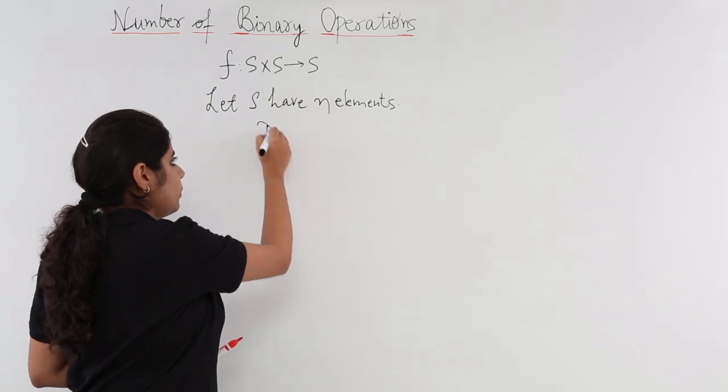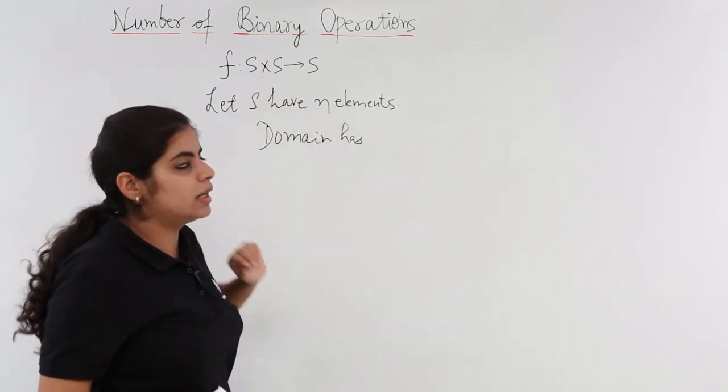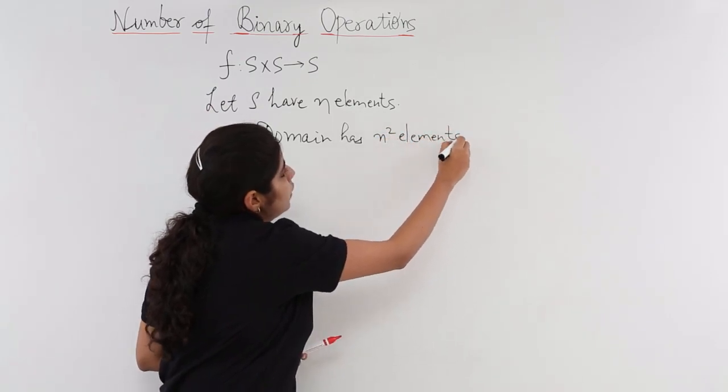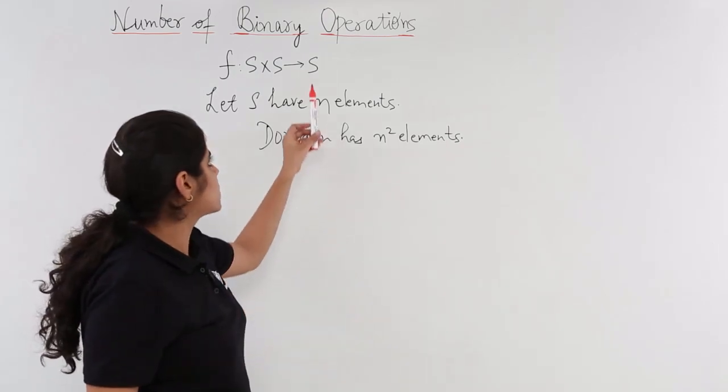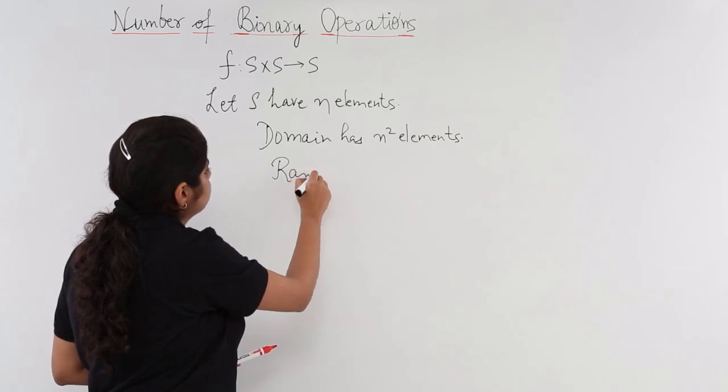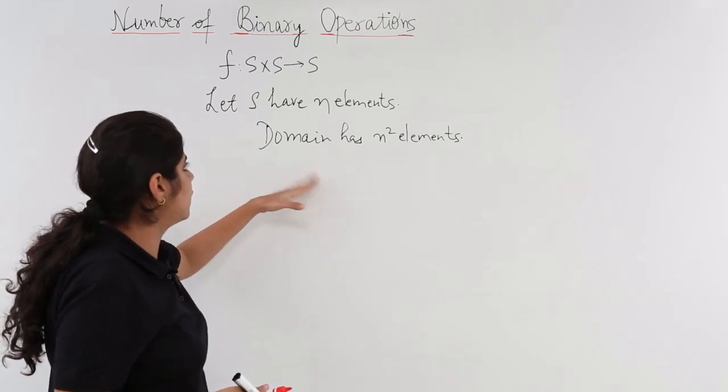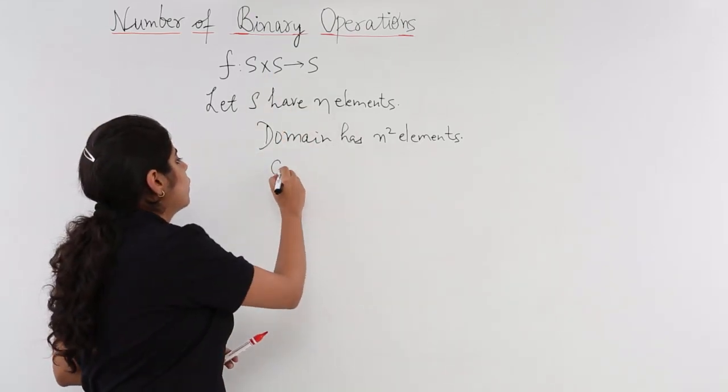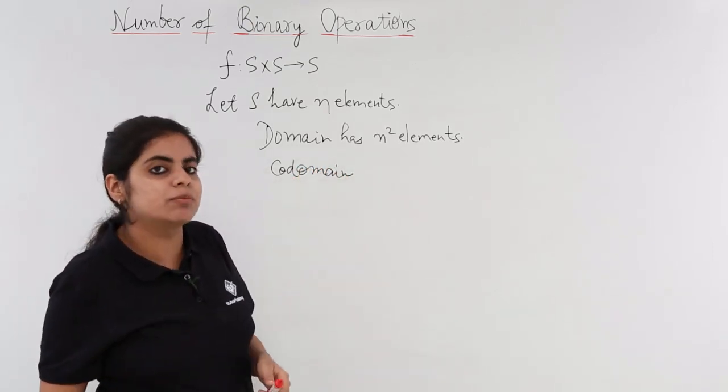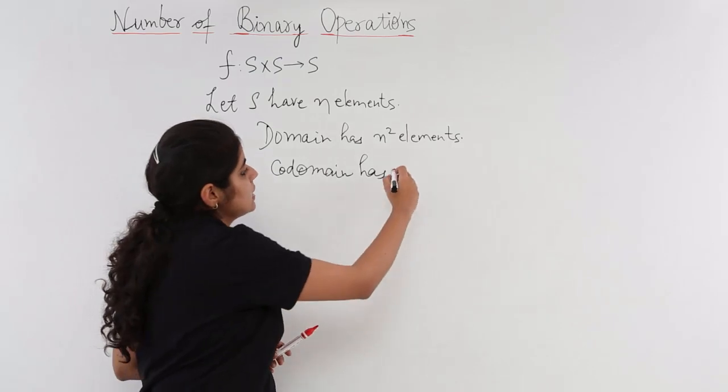So that gives me the domain has how many elements? When n and n multiplied will give me n square, so the domain has n square elements. And what about the range? The range is on right hand side, the right hand side is only S. So the range, or it is better to use the word codomain, because we are not sure as to what will happen. So right hand side, always it is better to write the word codomain. If it is onto function we can replace it by range. Codomain has how many elements? Codomain is simply S so it has n elements.